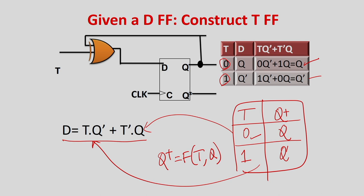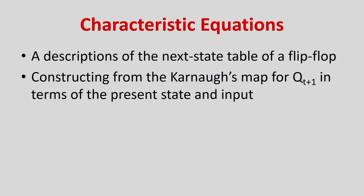Similarly, we look at the characteristic equations of all the flip-flops — not only T flip-flop, but JK flip-flop, RS flip-flop, and other flip-flops. A characteristic equation is a description of the next-state table of a flip-flop, and we can construct it from the Karnaugh map for Q(T+1). Here Q(T+1) is the same as the next state Q-plus, and we construct it in terms of present state and input.